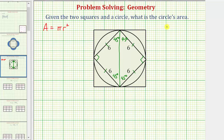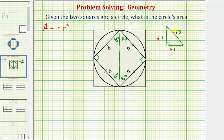For any 45-45-90 right triangle, the triangle is proportional to a right triangle where the two legs have a length of one and the hypotenuse has a length of square root two. Our 45-45-90 right triangles have legs that measure six units, so multiplying each side by six, the hypotenuse is six square root two units.